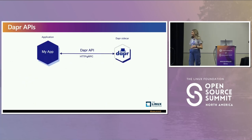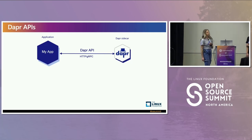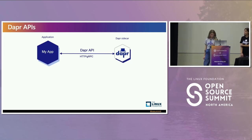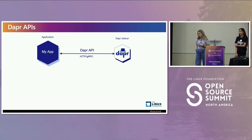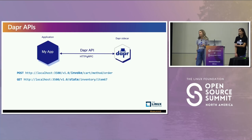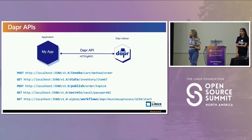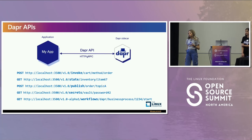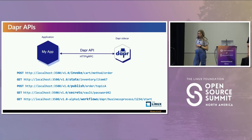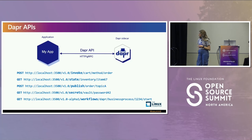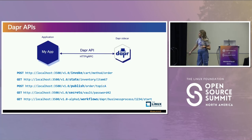So how does it work? DAPR runs as a sidecar pattern typically, and it can be used over gRPC or HTTP. You can use the native gRPC or HTTP clients within the language that you're writing in, or you can take advantage of the DAPR SDKs. Here are some of the APIs that you could call out to once your application has the DAPR sidecar available, and you can see they're all running over localhost due to the sidecar nature.